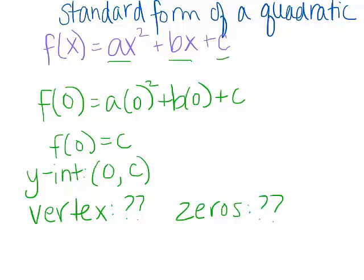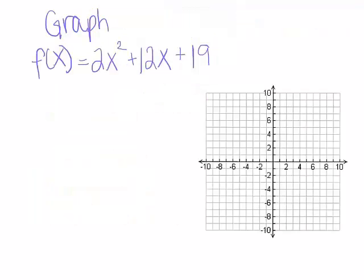A student mentions that completing the square investigation might be helpful. We might end up seeing a trick or a key fact about these that you might have seen before in the completing the square investigation. Here we have a quadratic 2x squared plus 12x plus 19, and it is in standard form, and it's asking us to graph this.